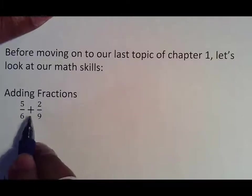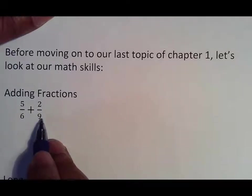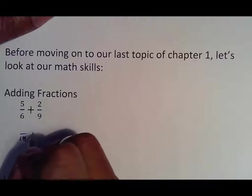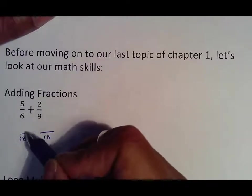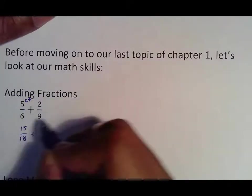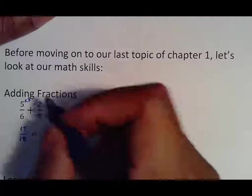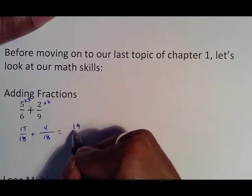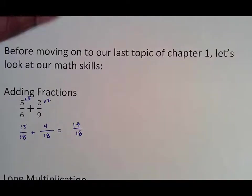Adding fractions: 5/6 + 2/9. 6 obviously cannot turn into a 9, so we look at the second multiple of the bigger number, which is 18. Can 6 turn into 18? Yes, it can. So we put an 18 here and an 18 there. 6 times what makes 18, or you could say 18 divided by 6. That answer is 3. 5 times 3 turns into 15. 9 multiplies by what to make 18? That answer would be 2, which makes that a 4. 15 plus 4 makes 19. 18 stays on the bottom. That is your adding fractions review. Make sure if you're having issues adding fractions, you speak up.